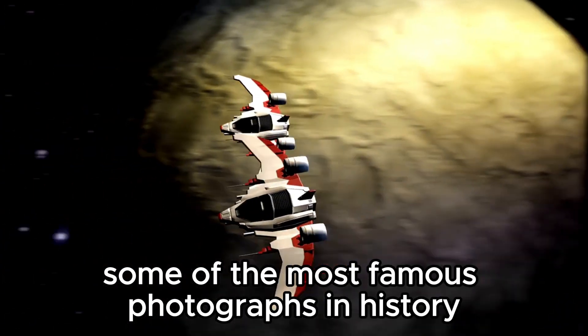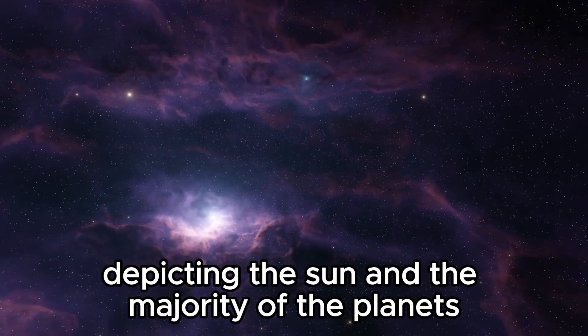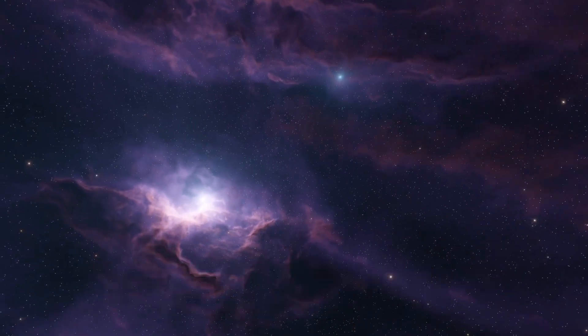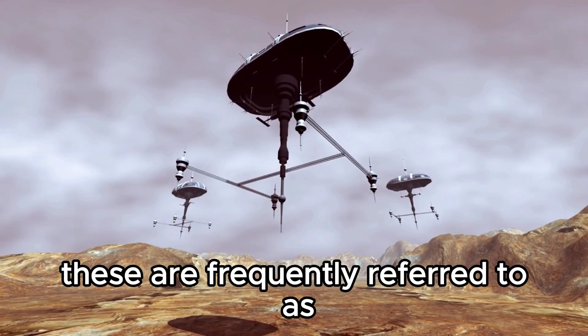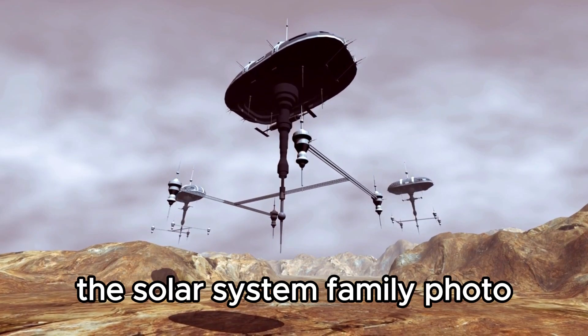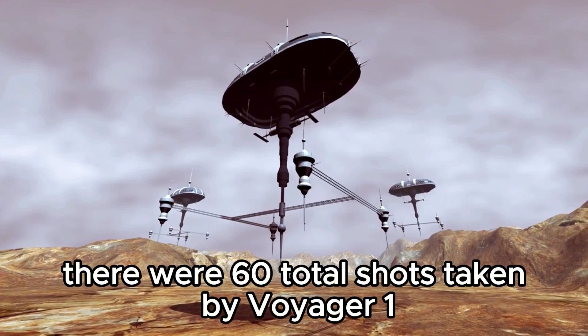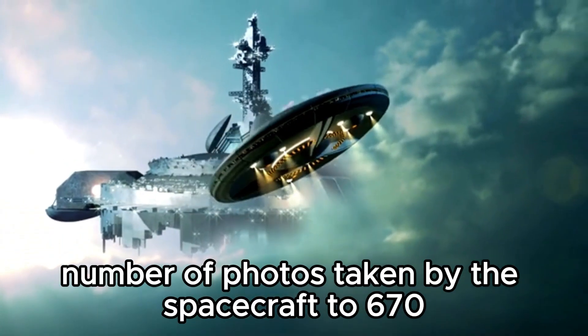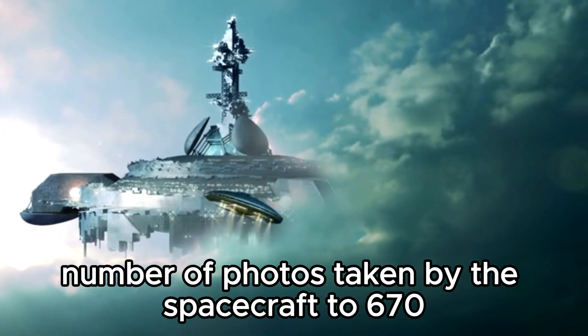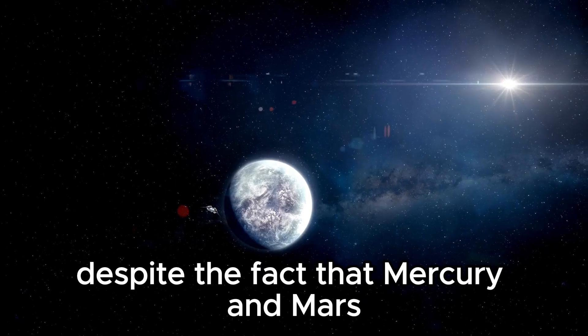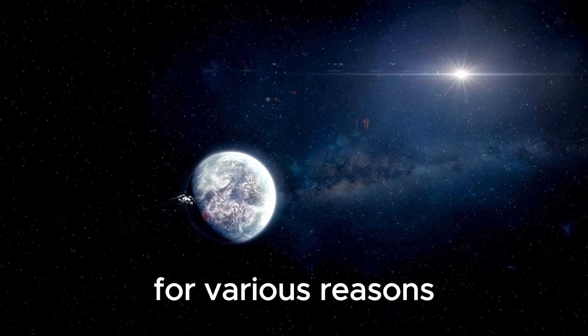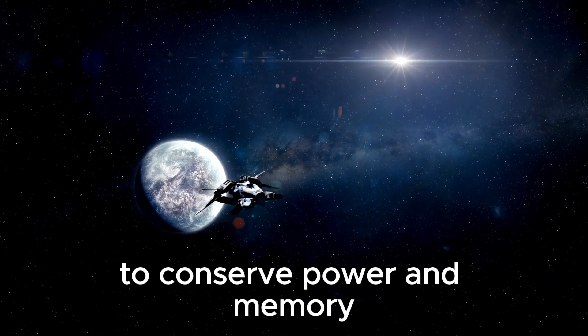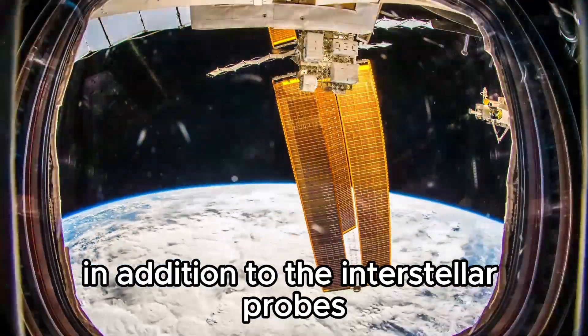Some of the most famous photographs in history depicting the Sun and the majority of the planets were taken by Voyager 1 on February 14th, 1990, while it was 6 billion kilometers from the Sun. These are frequently referred to as the solar system family photo. There were 60 total shots taken by Voyager 1, bringing the total number of photos taken by the spacecraft to 670. Despite the fact that Mercury and Mars cannot be seen in the photos for various reasons, the spacecraft's cameras were shut off to conserve power and memory before its trip to interstellar space.